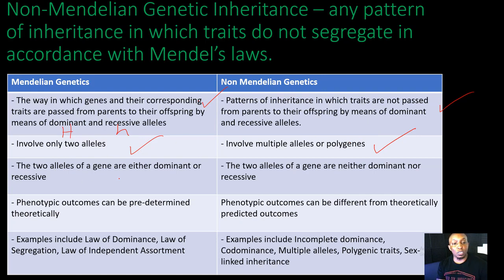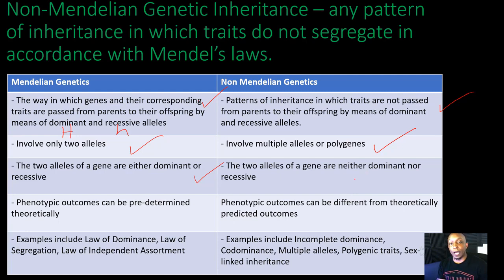In Mendelian genetics, the two alleles of a gene are either dominant or recessive — this is pretty straightforward, giving you homozygous dominant, heterozygous, and homozygous recessive. But then in non-Mendelian genetics, the two alleles of a gene are neither dominant nor recessive. This is where factors come into play, like incomplete dominance or codominance.